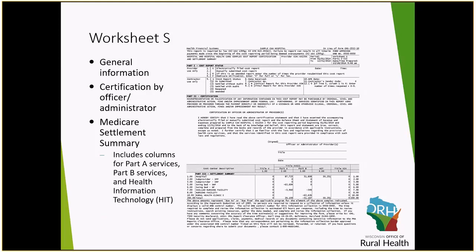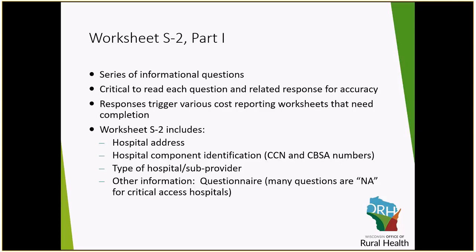At a high level, Worksheet S is where we see, on the first page of the cost report, our estimated settlement. That's broken down into Part A, Part B, and then rural health clinics and skilled nursing facilities if applicable. We'll see that breakdown between all those different types of Medicare patients or payments, and we'll see the overall settlement at the bottom of the page. This is also what your cost report preparer will send to you to sign at the end of the year, attesting that the cost report is prepared to the best of your ability and that you know of no fraudulent items that were disclosed.